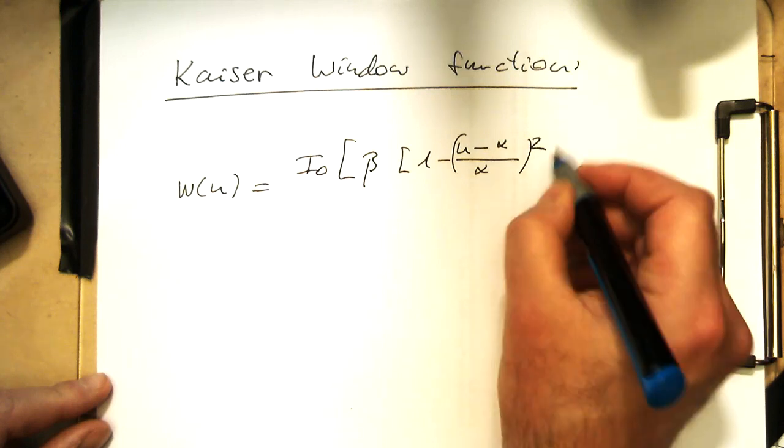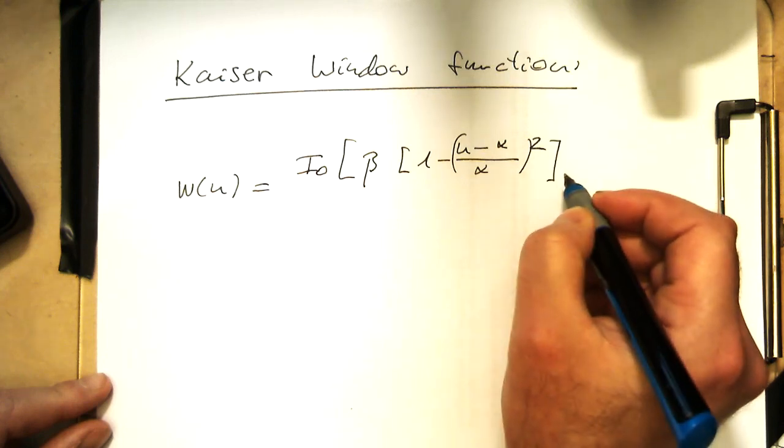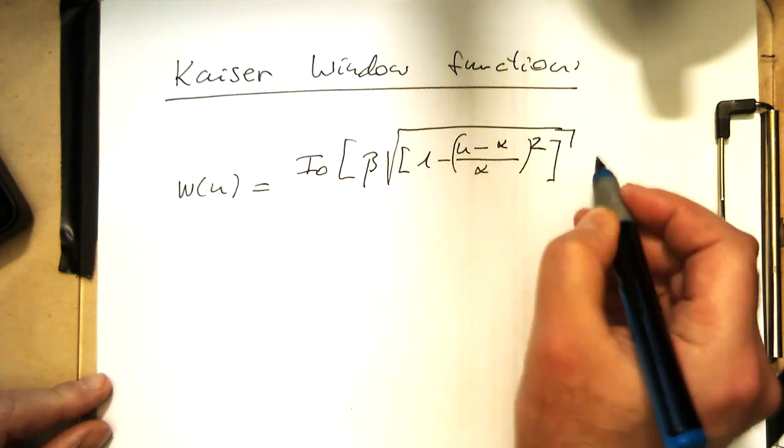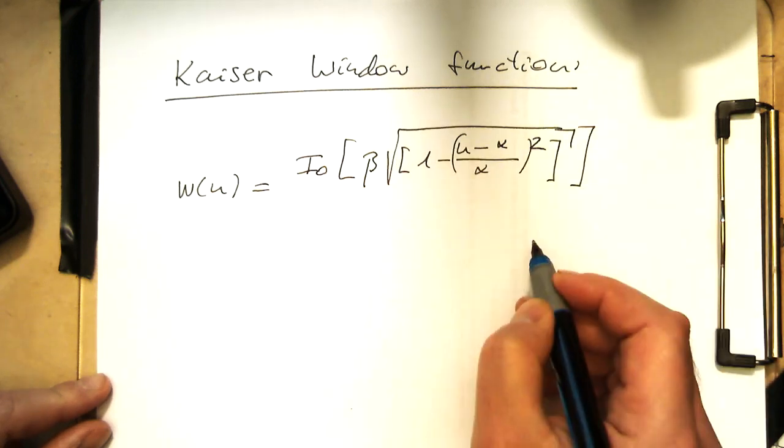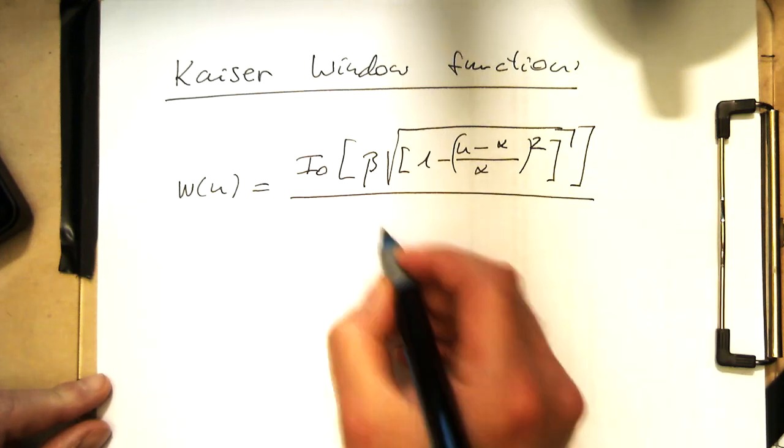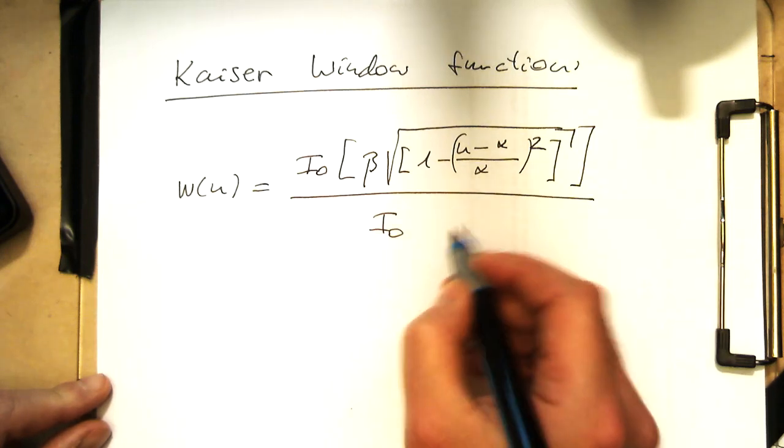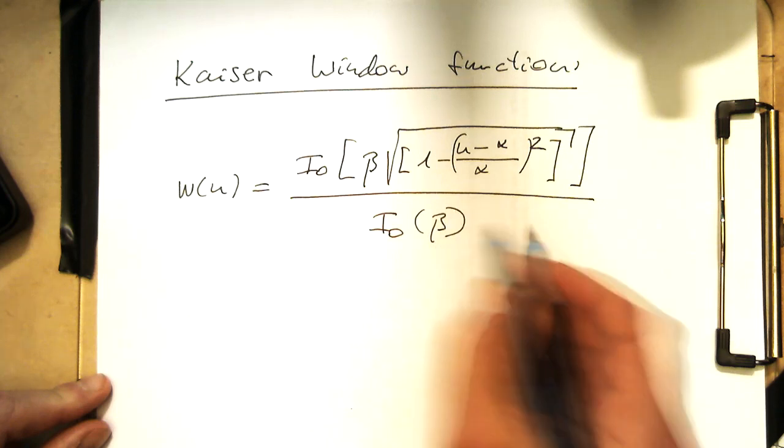Then another bracket around this, and then divided by i_0 of beta.